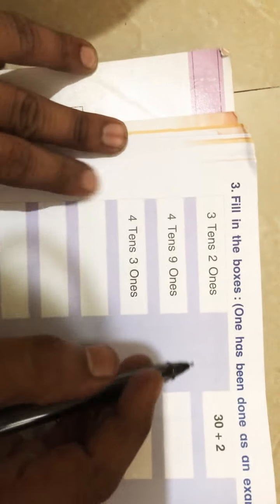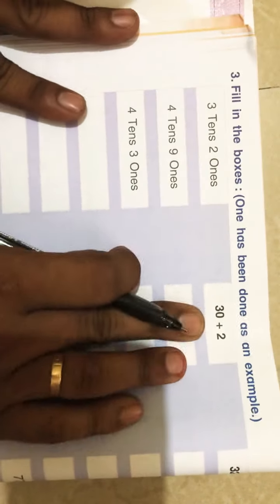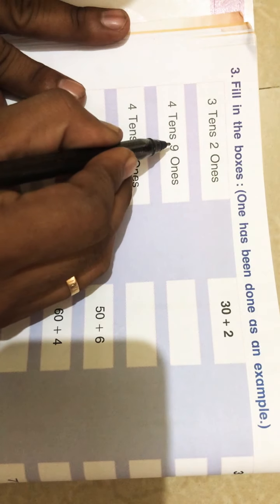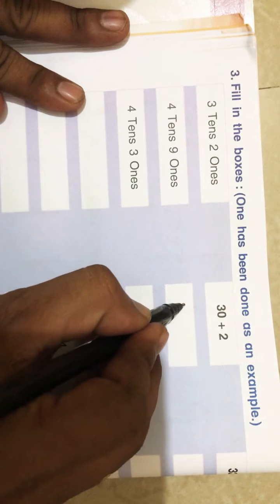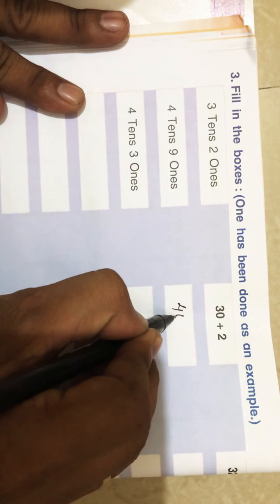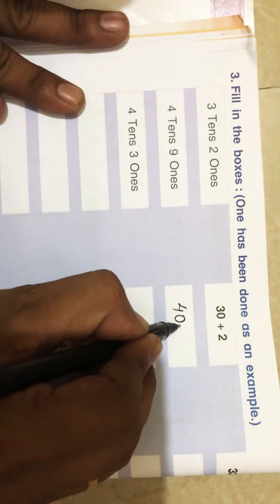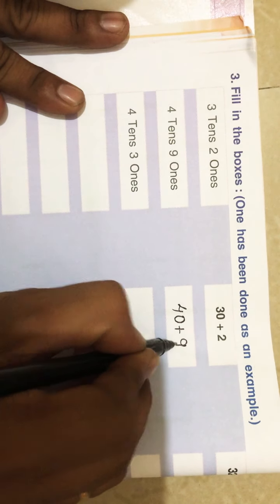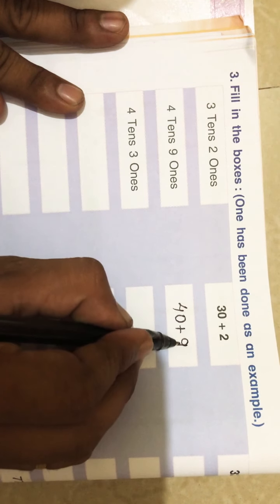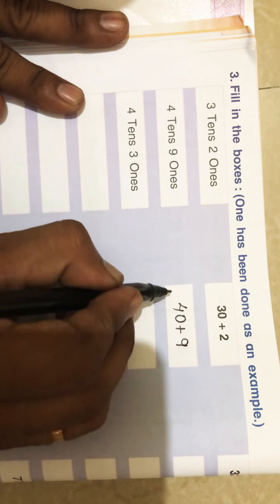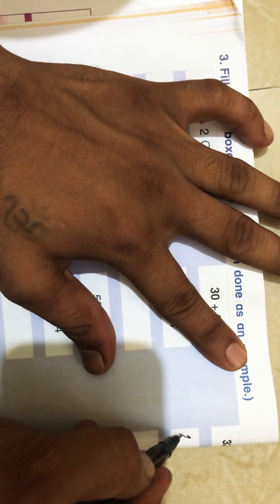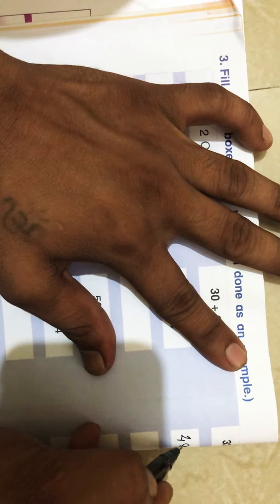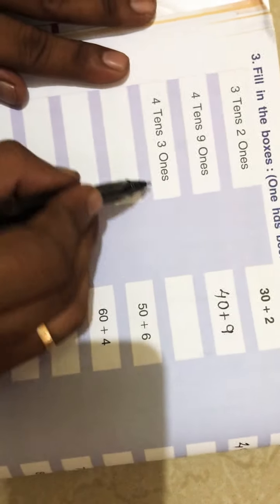Now see, first one they have done for us. See the next one: four tens, nine ones. Four tens place value is 40 plus nine ones means you will write nine. If you don't write directly, you can add. Otherwise, 40 means at tens place four, and at ones place it will be nine.